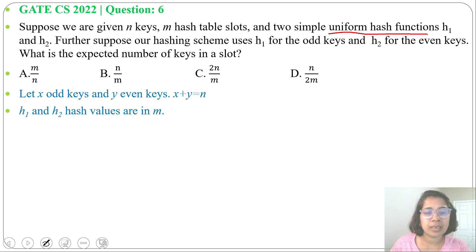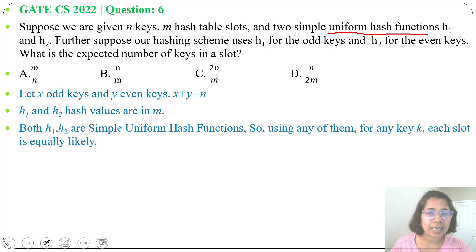uses uniform hashing, every slot has equal probability for every key. So in that case, the expected number of keys in a slot will be its load factor, and we know load factor equals n divided by m. So the answer will